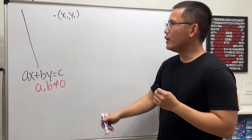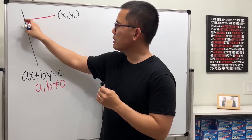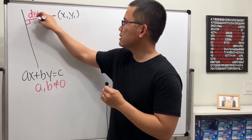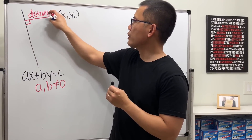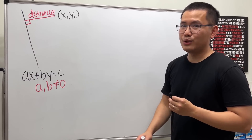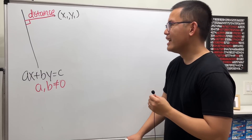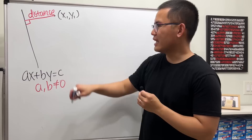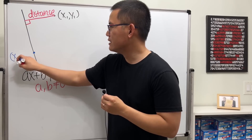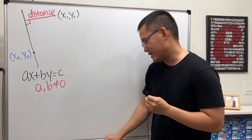The distance from a point to a line is defined to be the shortest distance. To find it, we start with the point and drop a perpendicular to the line — that length is the distance we are looking for. We'll use vectors to help us. First, pick any point on the line; let's call it (x₀, y₀).